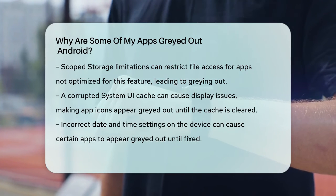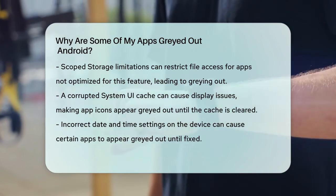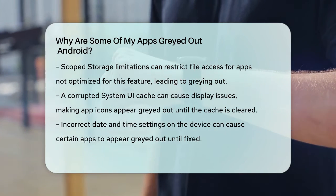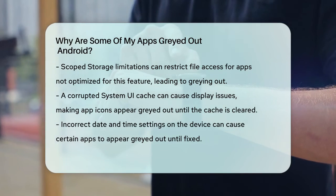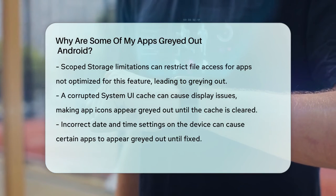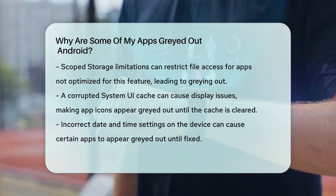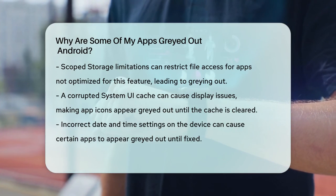So if you see grayed out apps on your Android device, it's likely due to one of these reasons. By checking and adjusting these settings, you should be able to get your apps up and running again.